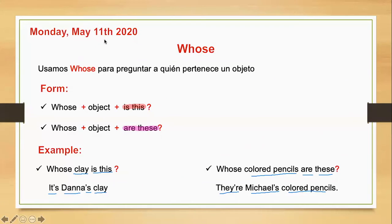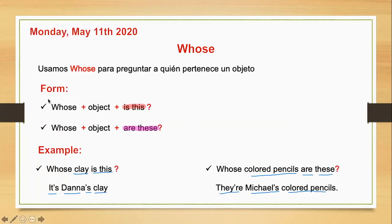Entonces recordemos siempre: para preguntar a quién le pertenece algo, voy a decir 'whose', luego el objeto, y luego 'is this' o 'are these', dependiendo si estoy preguntando por una sola cosa o por muchas cosas. That's the explanation for our today's topic.